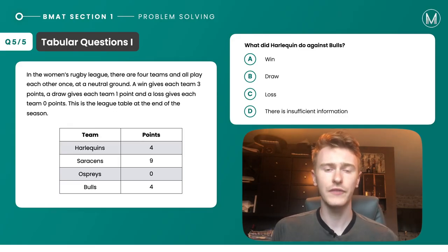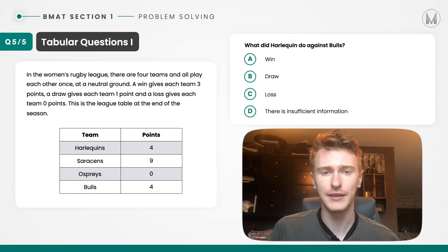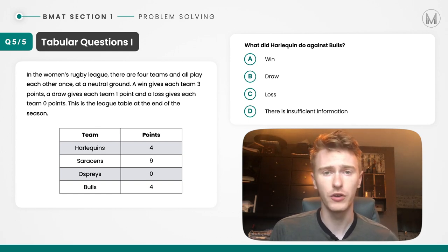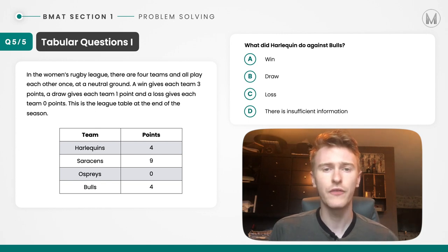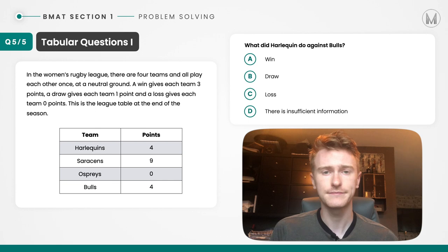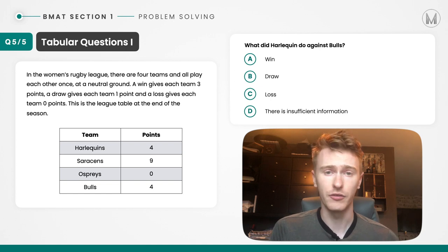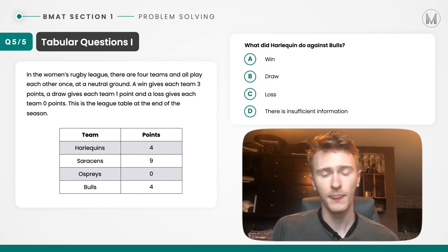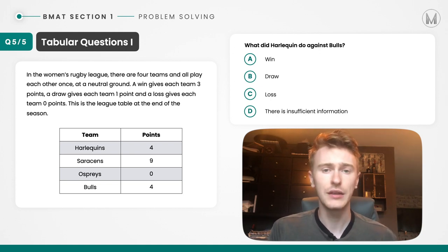Moving on to our final question. Within the premise, we're told the basic rules: three points for a win, one point for a draw, and zero for a loss. This is a theme that crops up time and time again with BMAT, so it's worth familiarising yourself with these questions where teams receive points depending on whether they win, draw or lose. Teams play each other once — so each team will play three games. We can see that the Sarakens have nine points, meaning they must have won all three games, getting three points each. Three times three gives nine.